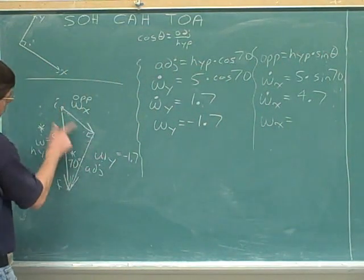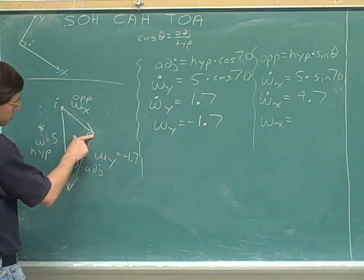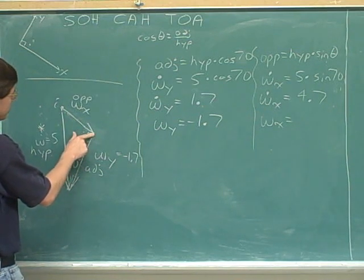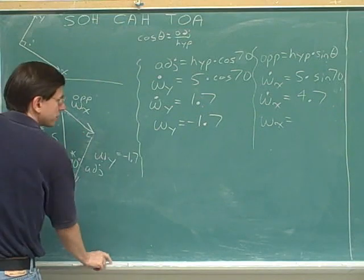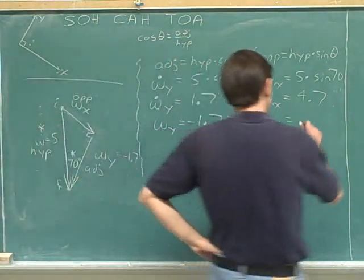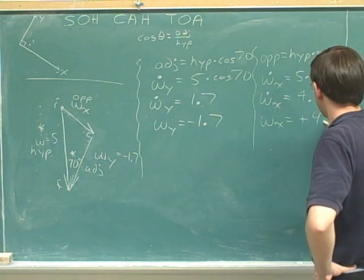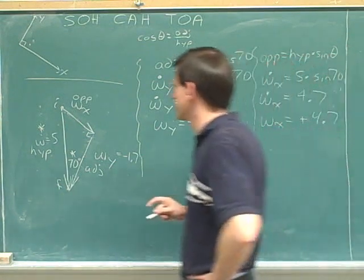Well, we've determined that Wx is pointing in the downright direction. That's also what this x-axis is pointing in, down and right. So Wx is pointing in the positive direction, positive 4.7.